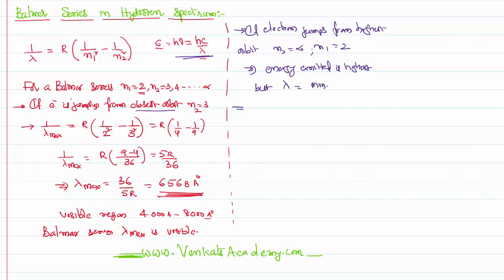So we can write an equation for lambda minimum based on this model. 1 by lambda minimum is equal to Rydberg constant of 1 by 2 square minus 1 by infinite square. Therefore 1 by lambda minimum is Rydberg constant of 1 by 4. That implies lambda minimum is 4 by Rydberg constant.